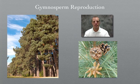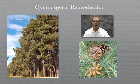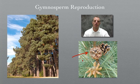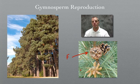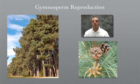Gymnosperm reproduction is going to be different from angiosperms, which we'll look at in a later video. Gymnosperms, like this pine tree, obviously have pine cones. A pine tree actually has two sexual organs — female and male. This structure you normally call a pine cone is actually the seed cone, which is the female reproductive structure — it produces the egg. Down here we have the pollen cone, the male reproductive structure, which produces sperm or pollen. These two structures are required in order to sexually reproduce a gymnosperm.